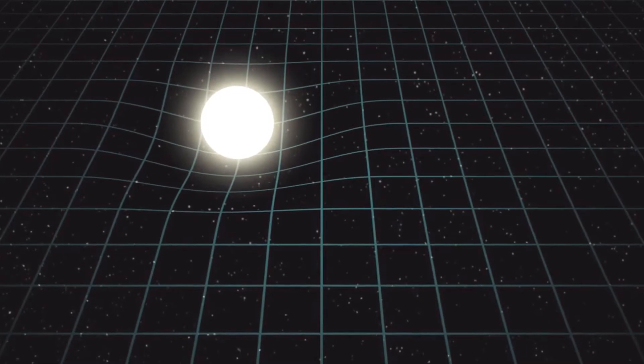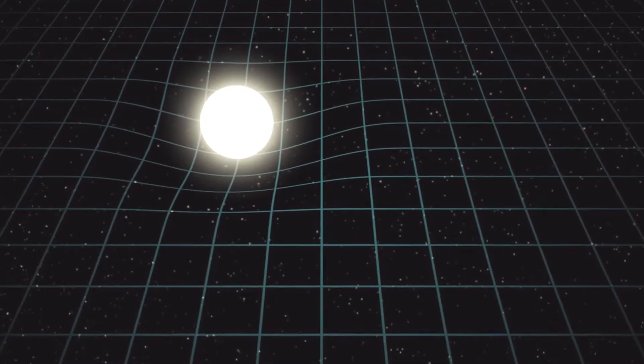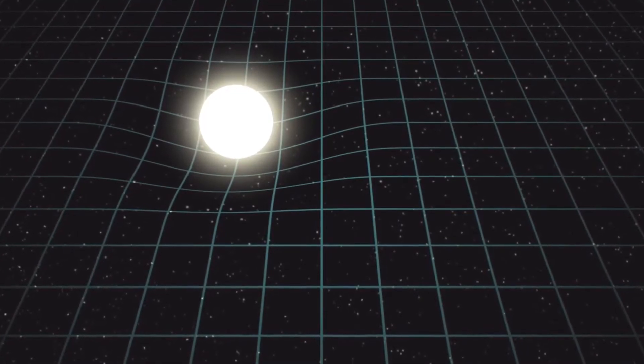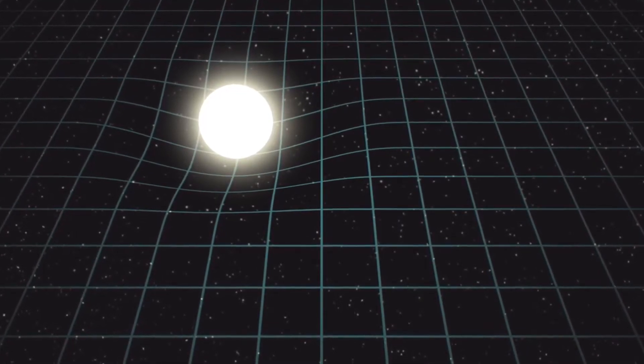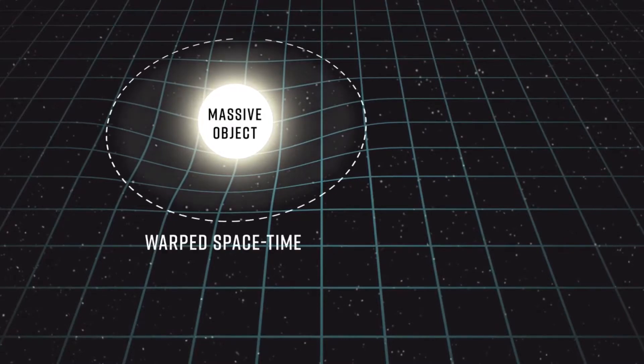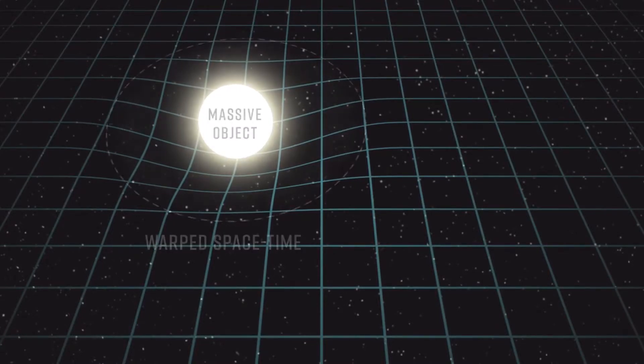Rather, the mass of the star curves the space around it in such a way that a straight line in three-dimensional space isn't straight anymore, but curved ever so slightly towards the star.